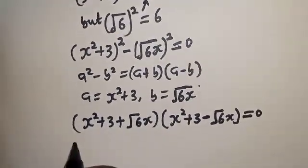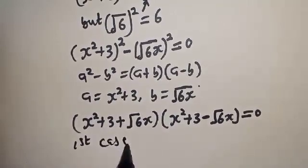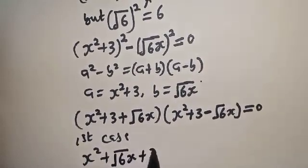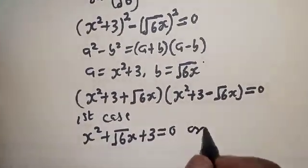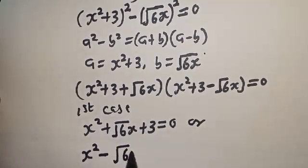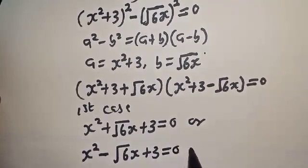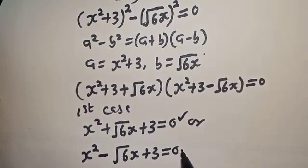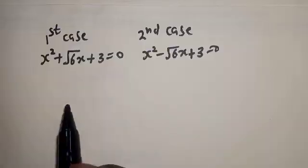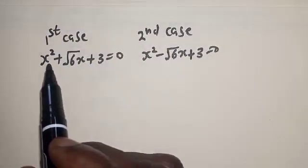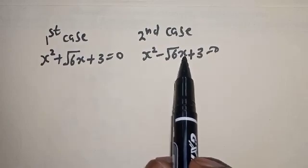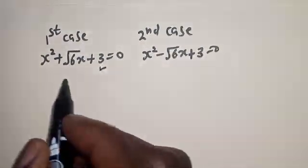There are two cases here. The first case: x squared plus root 6 x plus 3 equals zero. The second case: x squared minus root 6 x plus 3 equals zero. Both are quadratic equations. Let's solve each using the quadratic formula.